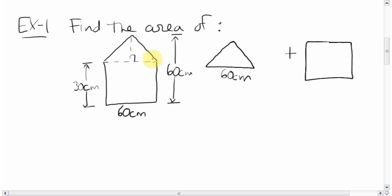Now the height, we're not really given the height here, but we can figure it out. We're told that the whole height of the entire object is 60, and from there to there is 30. So that must mean that this height is 30. 30 plus 30 is 60. So we know that the height of this triangle is 30 centimeters.